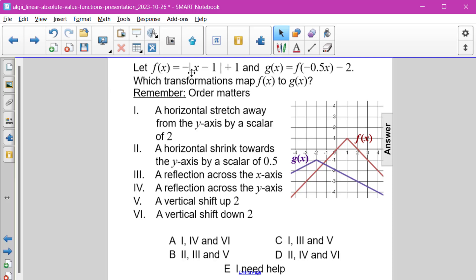Let f of x be equal to the negative absolute value of the quantity x minus 1, plus 1, and g of x be equal to f of negative 1 half x, and then minus 2 at the end. Which transformations map f of x to g of x? And remember that the order matters.